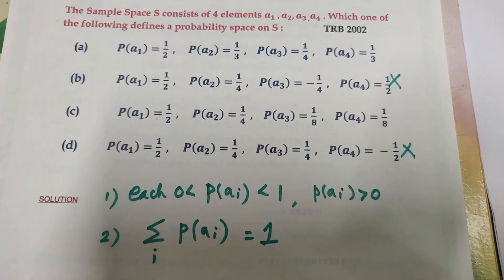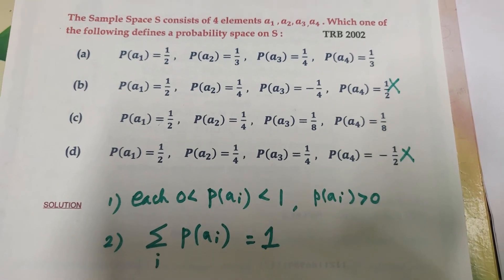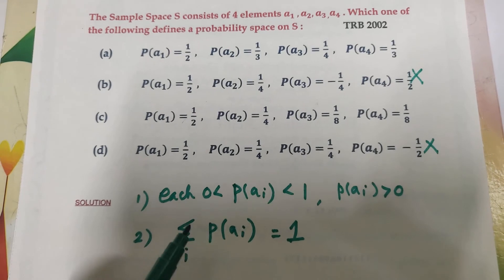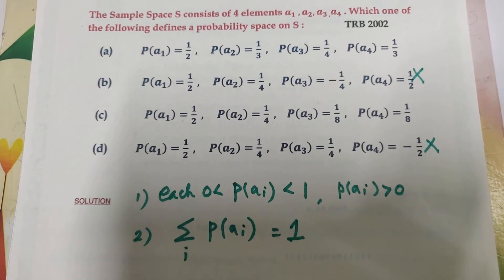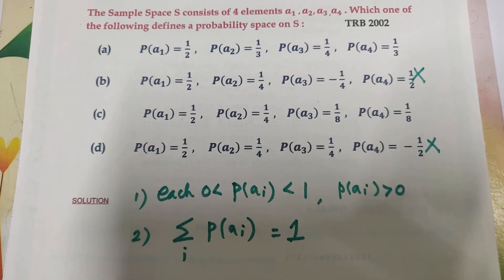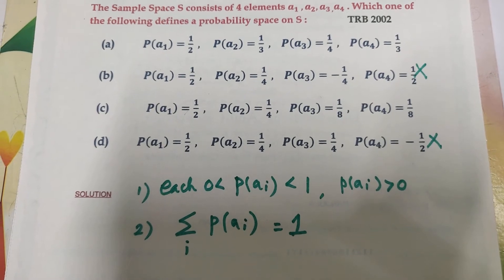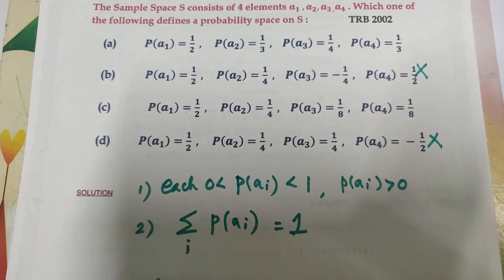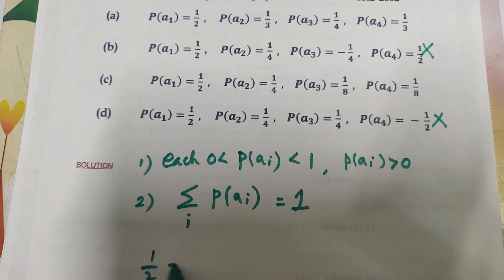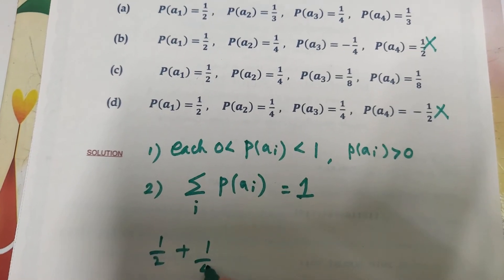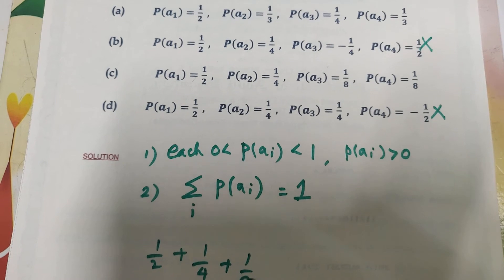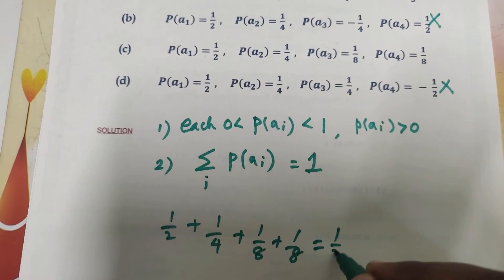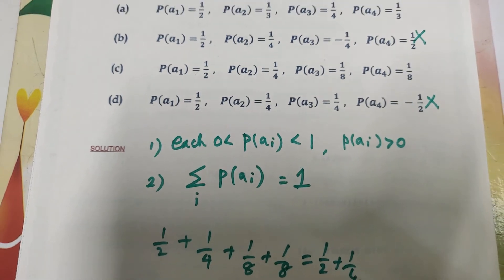Now if we look at options A and C: for option A, we check the property — we add all probabilities and verify the sum equals 1. For option C, the probability values are 1/2, 1/4, 1/8, and 1/8. Let's add them: 1/4 + 1/8 + 1/8.